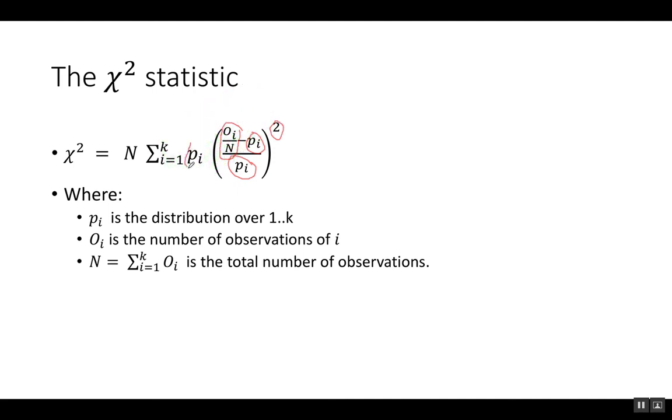We average all of these according to the distribution p_i and multiply it by the number of observations. This gives us the chi-square statistic, which has a particular distribution, and using that distribution we can calculate the p-value.